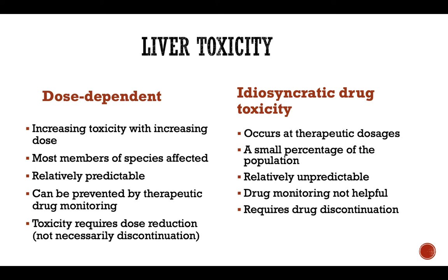With dose-dependent toxicity, the majority of members of a species will be affected, and this type of toxicity can be prevented by therapeutic drug monitoring — if you ensure you give an appropriate dose, toxicity will likely not develop. A classic example is phenobarbital: we recheck phenobarbital levels in the blood about two weeks after starting it, and as long as they're within a certain range we don't change the dose. However, if the concentration goes higher than this range, we decrease the dose to prevent signs of toxicity.